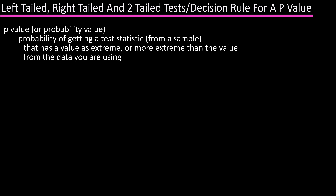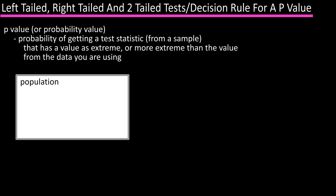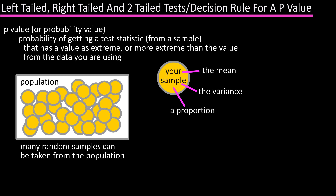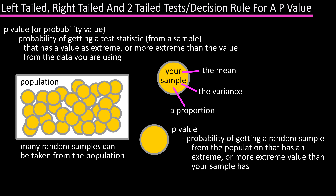Let's look at a visual of this. This box represents a population, and you pull a random sample from this population, from which you can calculate the mean, the variance, or a proportion. In this population, there are an infinitesimal number of random samples that can be pulled. The p-value is the probability of getting a sample from this population that has an extreme or more extreme value than the one you got from your sample — whether that value is the mean, the variance, or a proportion.